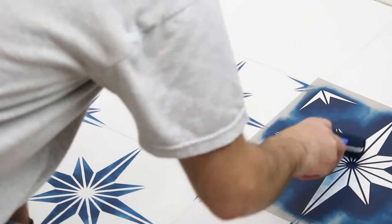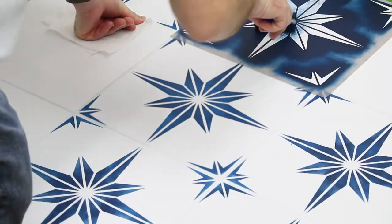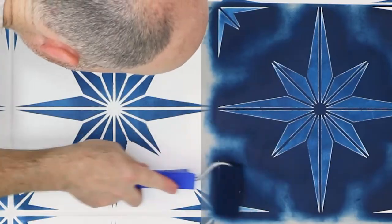To fix any stenciling mistakes such as bleeding, apply some of the base coat paint using a thin artist brush.